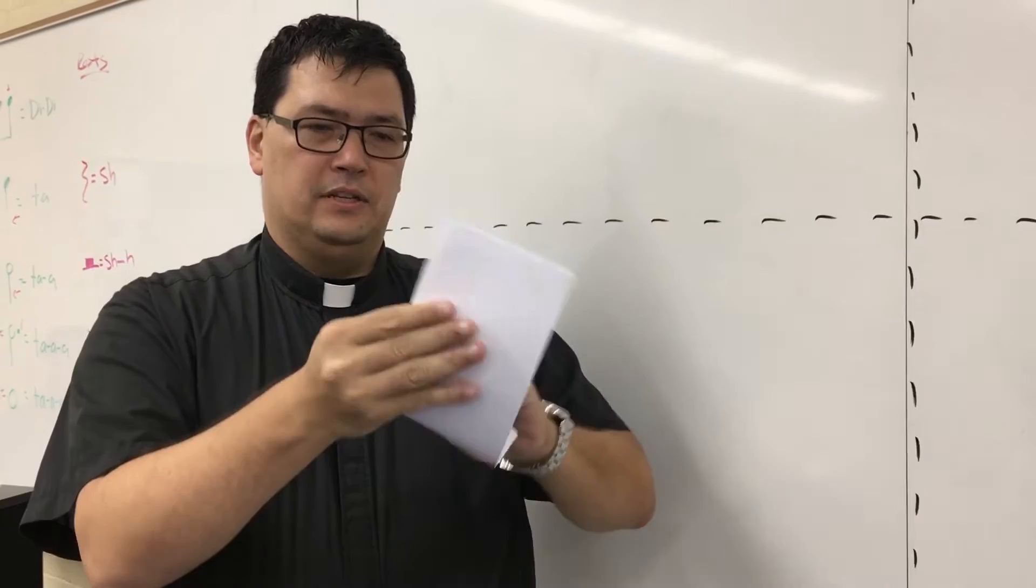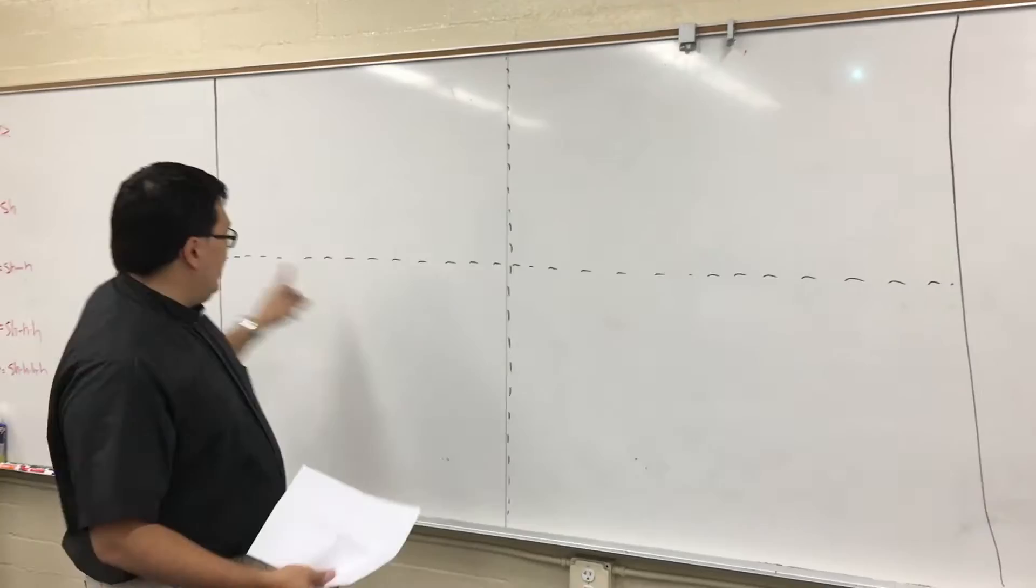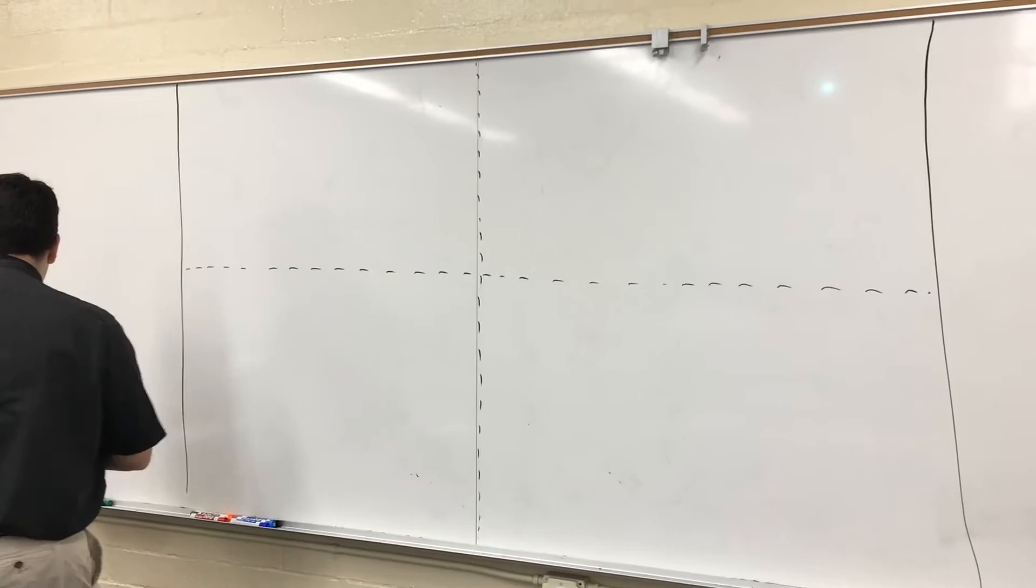Fold it in half the long way, and fold it in half the short way, and that way you get four boxes. And this map we're going to do on the landscape. And here on the board I've recreated it. Here's the edges of my paper, and the dashed lines represent the folds.